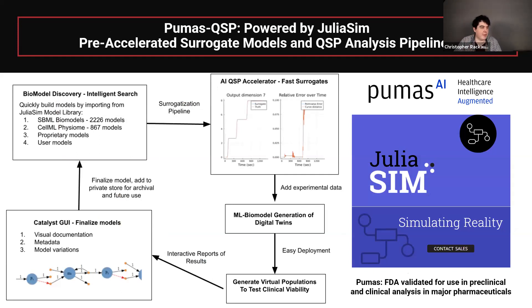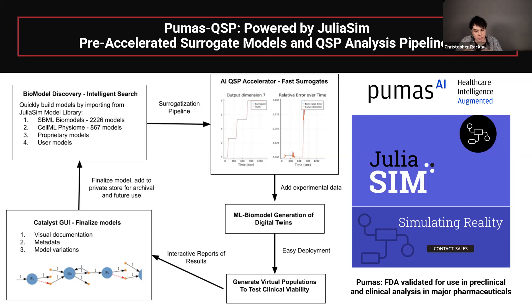This is all coming together as Pumas QSP, powered by JuliaSim — the connection between Julia Computing and Pumas AI. There is a full model library with all these CML and SBML models, and we now have the ability, because the surrogation process is so robust, to take models directly from the library and fit them through a surrogation pipeline that just generates a fast version using nice defaults. We can then incorporate data you have to make it more accurate than the original model — that's known as a digital twin — and use these digital twins within the virtual population setting. That's really the key: the moment you want hundreds of thousands of ODE solves, that's when you want the accelerated version. And there's a GUI on top, because every domain scientist we talk to always wants a GUI.